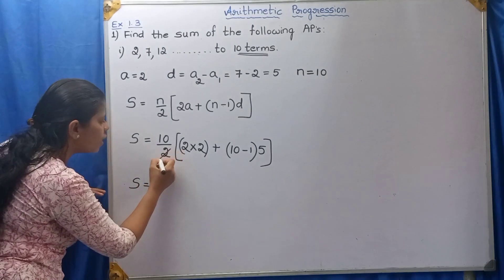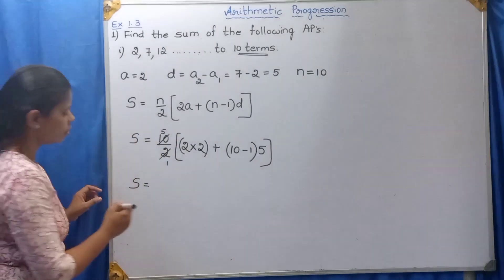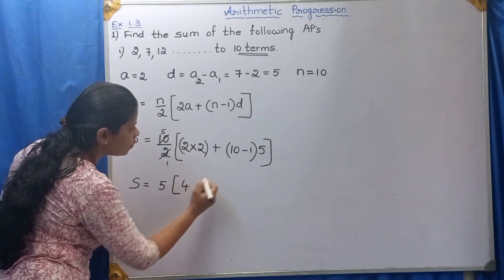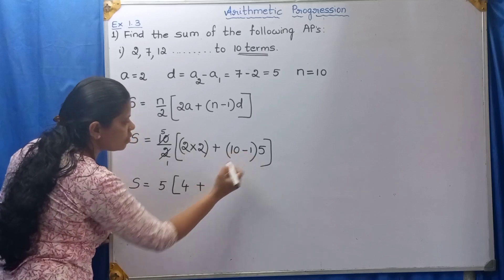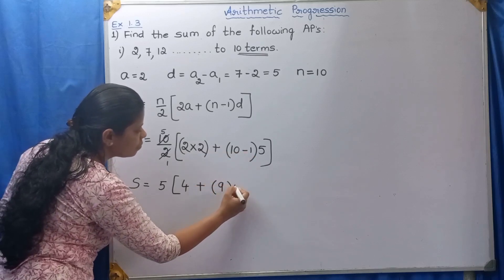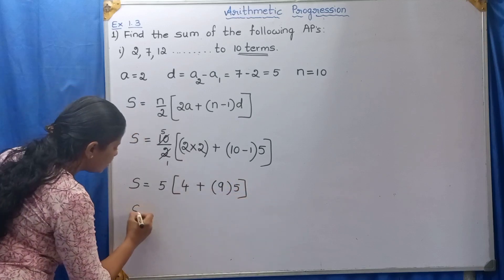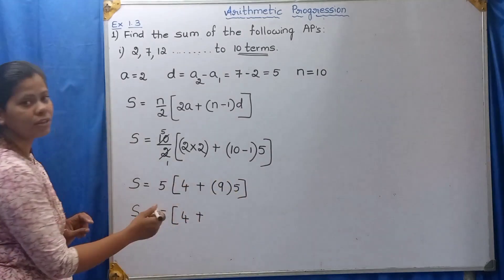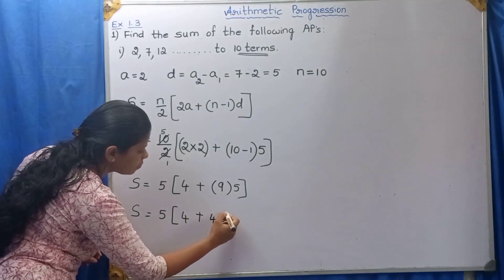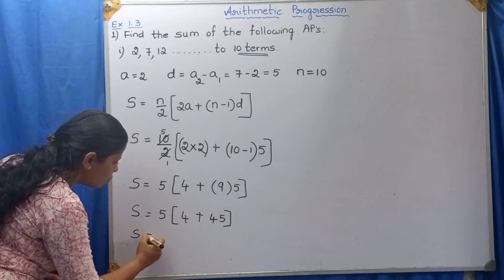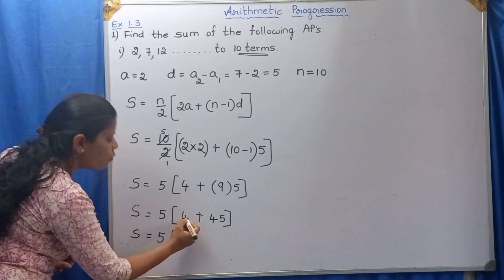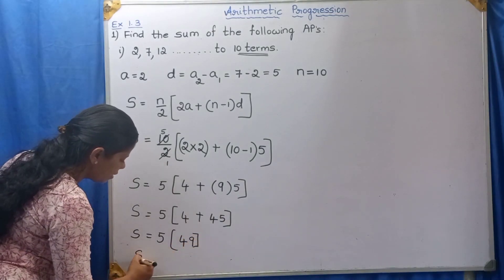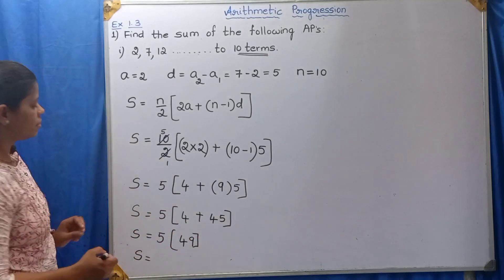S equals — 10 by 2 gives 5. 2 into 2 is 4, plus 10 minus 1 is 9, into 5 gives 45. So S equals 5 into 4 plus 45, which is 5 into 49, equals 245. We got the answer: 245.